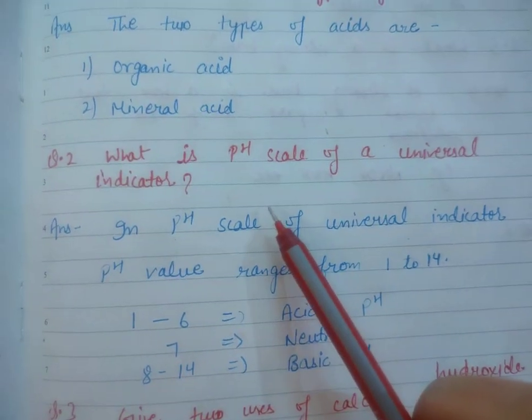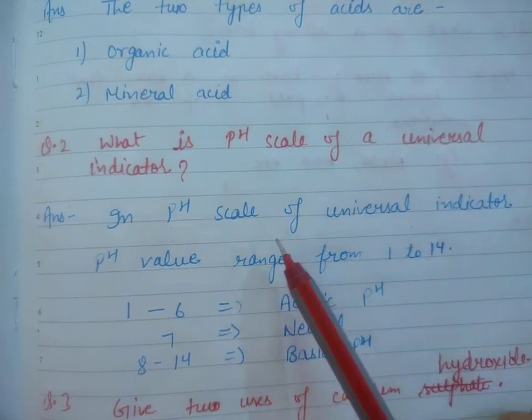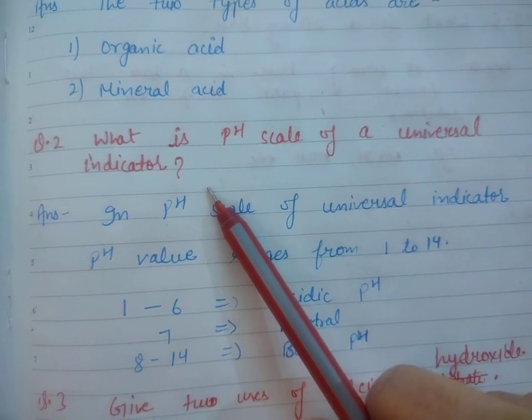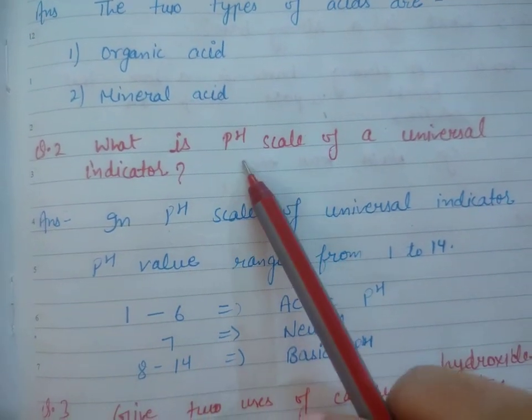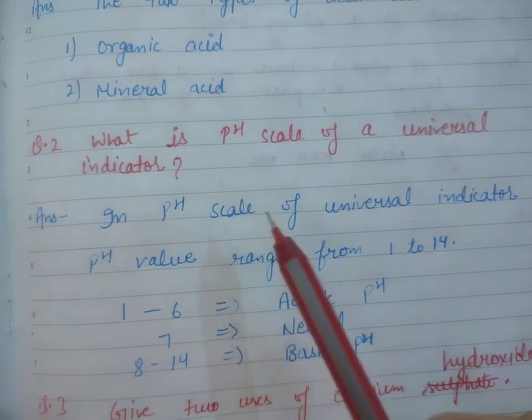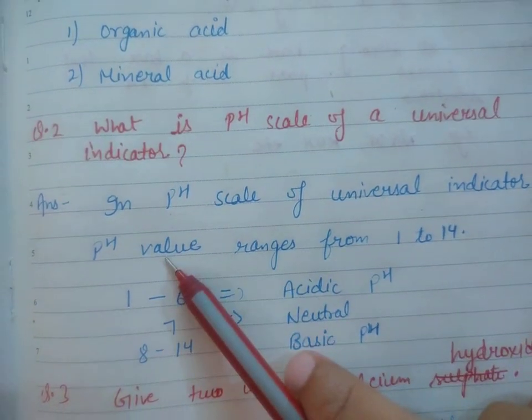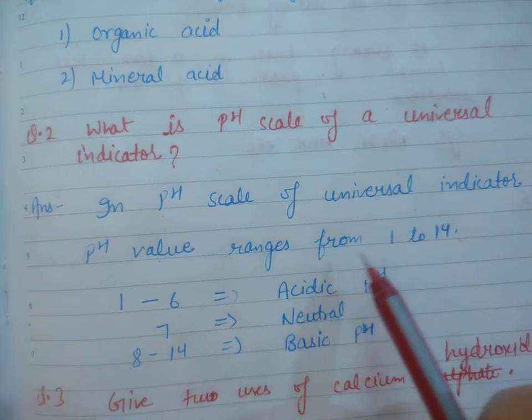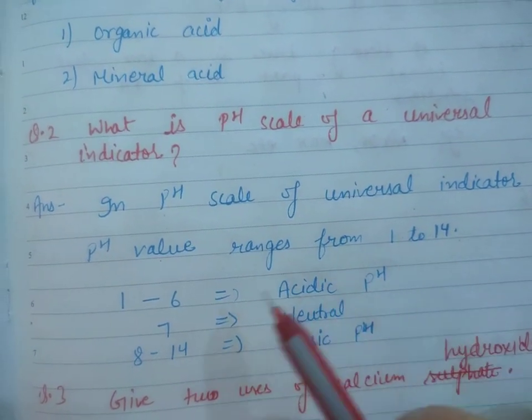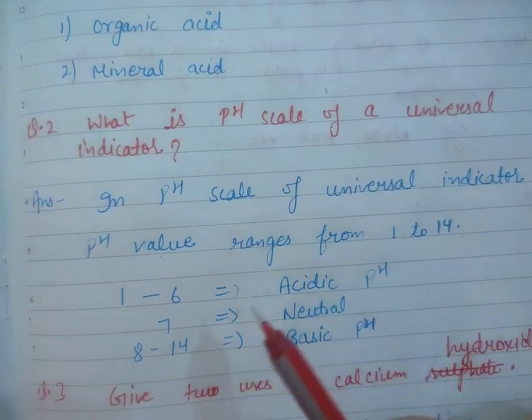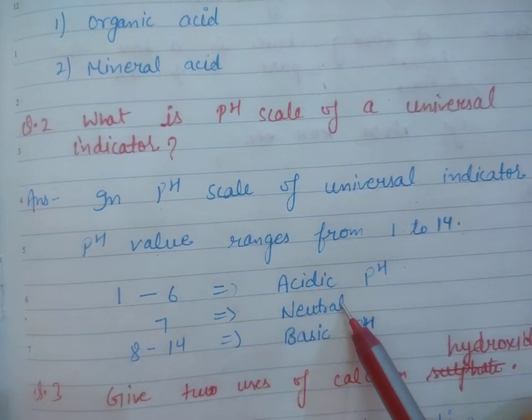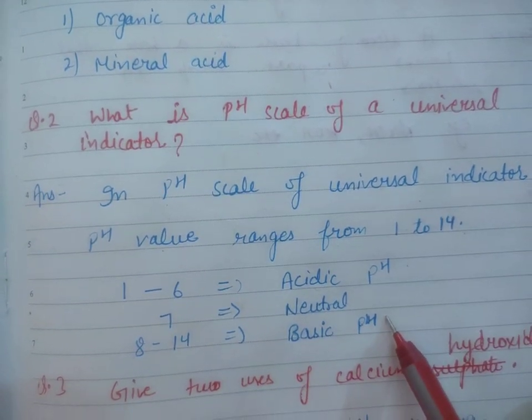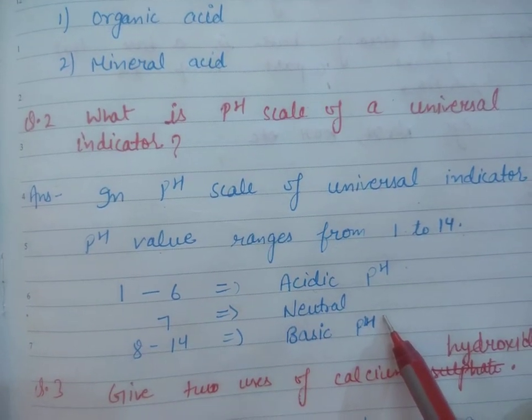Then second question: What is the pH scale of a universal indicator? Universal indicator is a mixture of indicators. In pH scale of universal indicator, pH value ranges from 1 to 14. 1 to 6 shows acidic pH, pH 7 is neutral, and 8 to 14 is basic pH.